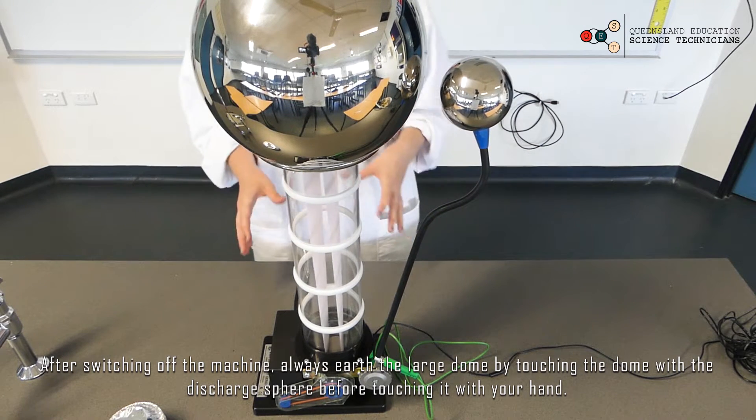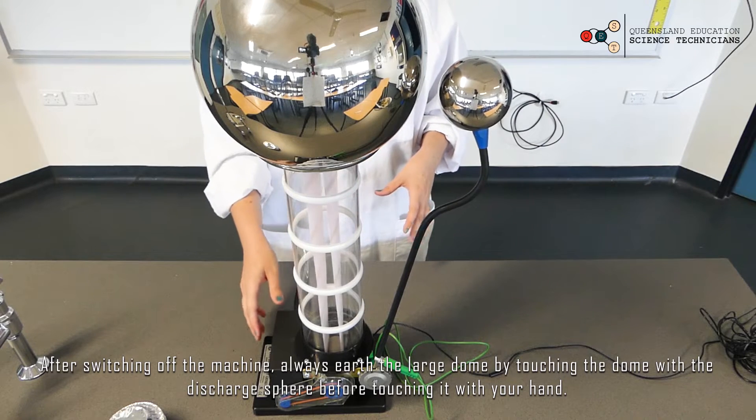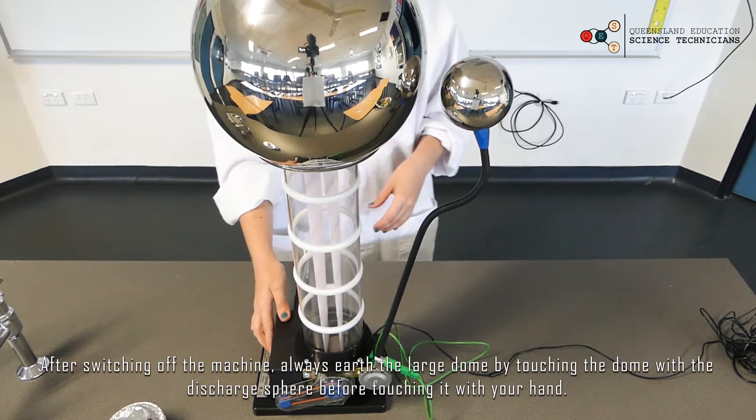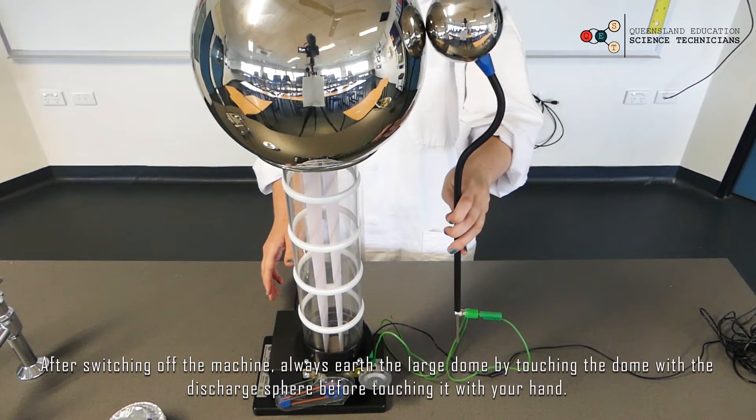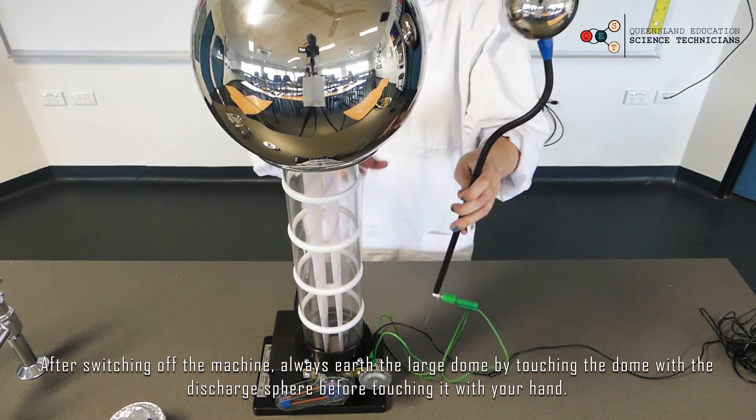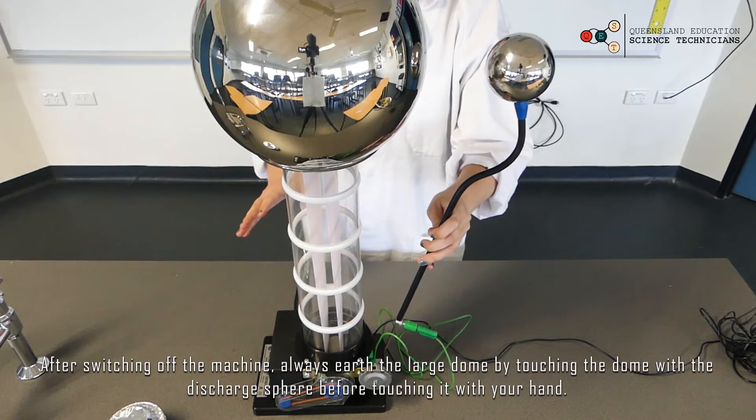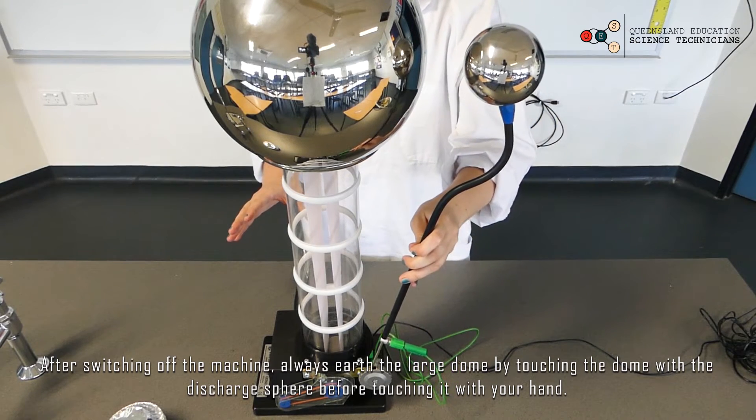Whenever you're done doing whatever you need to do with the Van de Graaff, always turn it off and always make sure that you're touching the main dome with the discharge sphere to make sure that any static electricity that's left is discharged.